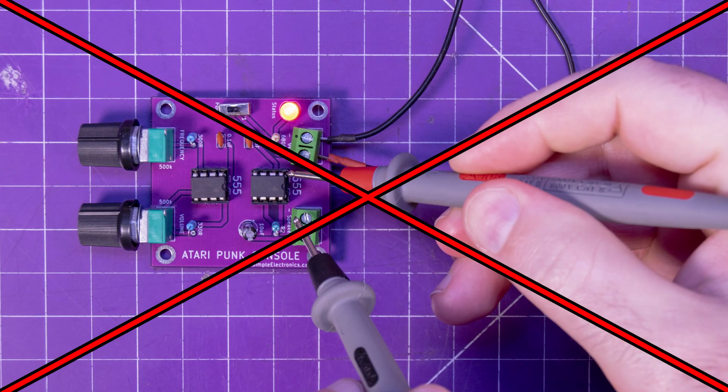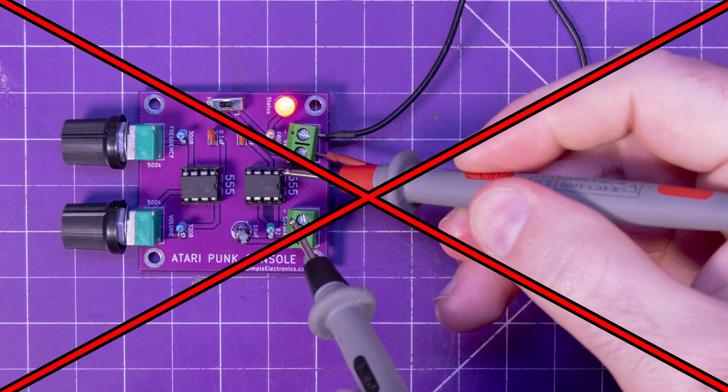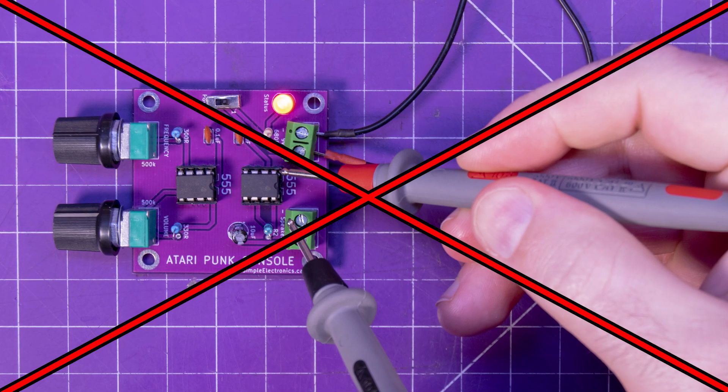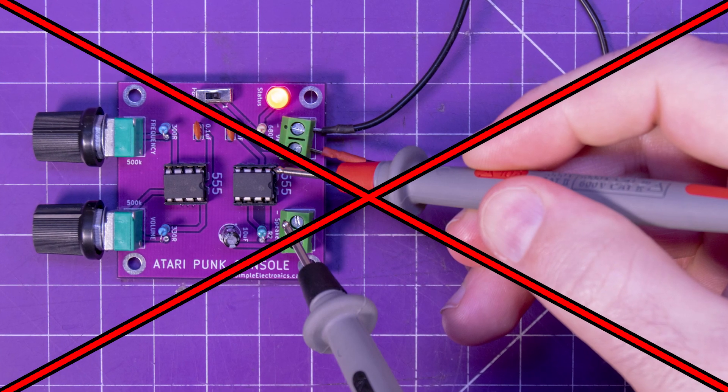The last thing you need to know before you can go check continuity is that your circuit or your device must be unplugged or turned off in order to make your measurement. There's a very slim but real chance that you can damage your multimeter if your device is plugged in or active. Let's test it out.